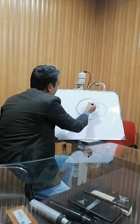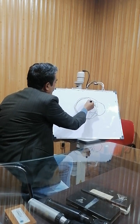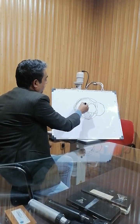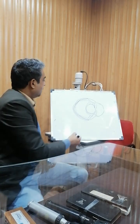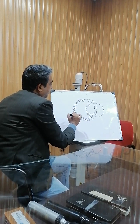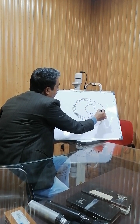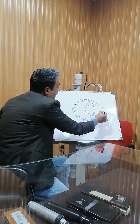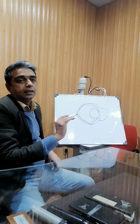Here is the anterior hyaloid membrane and this is the vitreous cavity. The vitreous cavity contains vitreous humor, which is a jelly-like structure. And this is the anterior chamber — the anterior chamber is between the cornea and the iris, and it contains aqueous humor.